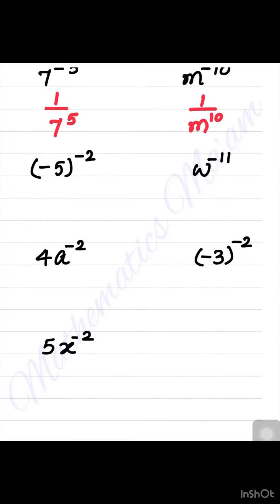Now if you have any negative number like negative 5 to the power minus 2, don't worry, it is the same thing. You just have to write 1 by negative 5 power 2 because you just have to make the negative power positive. So just write 1 by and that's it.